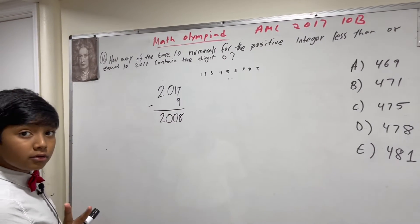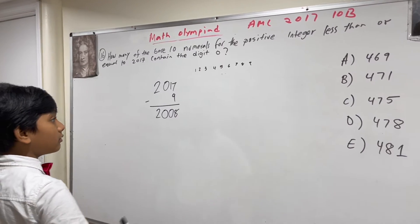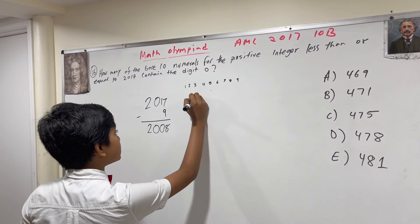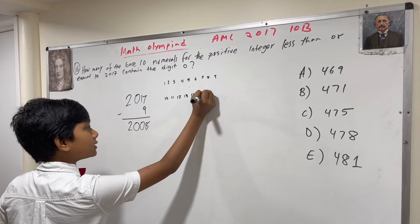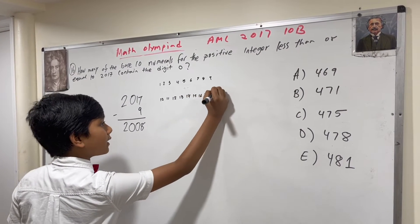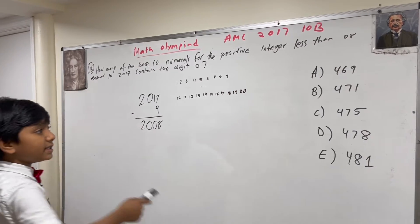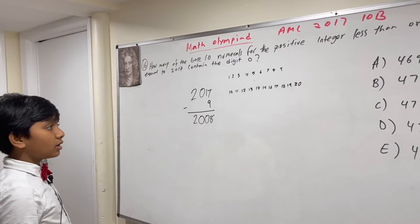Then, you have the two-digit numbers. Let's think about this. There's 10, 11, 12, 13, 14, 15, 16, 17, 18, 19, and 20. And you'll see this pattern repeated throughout.